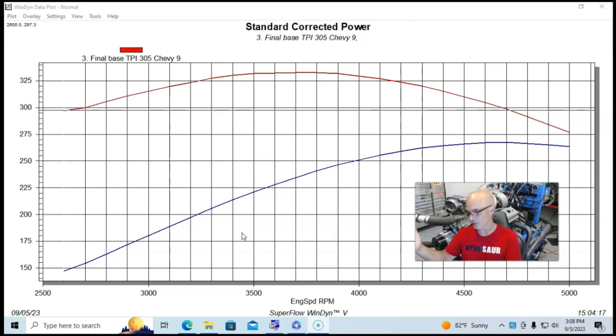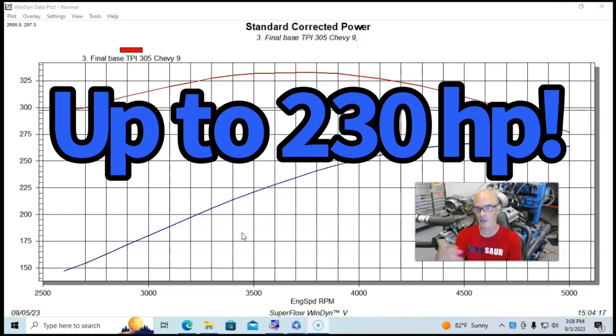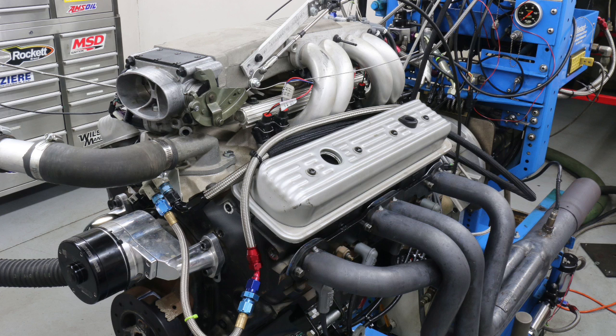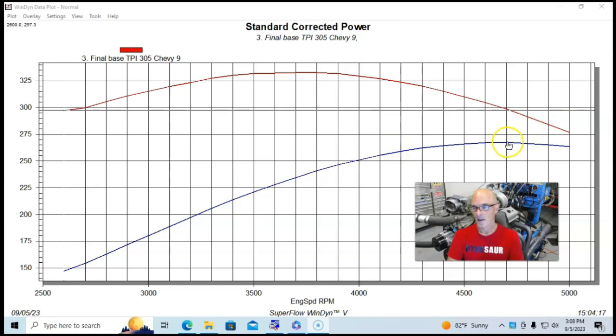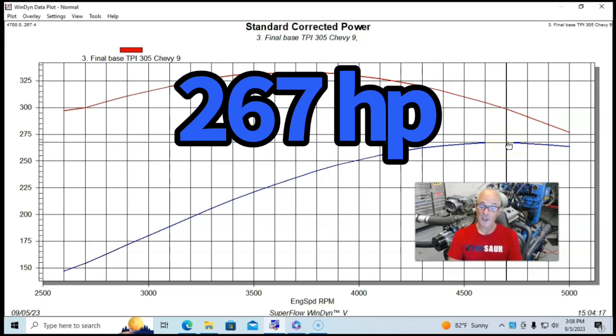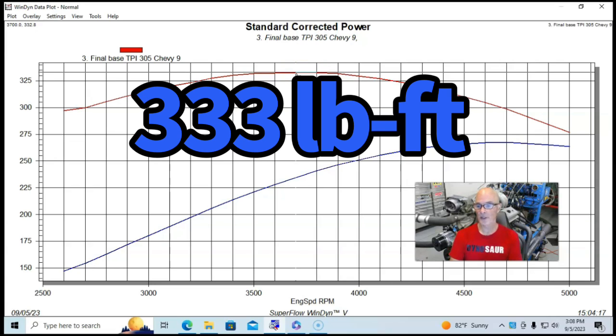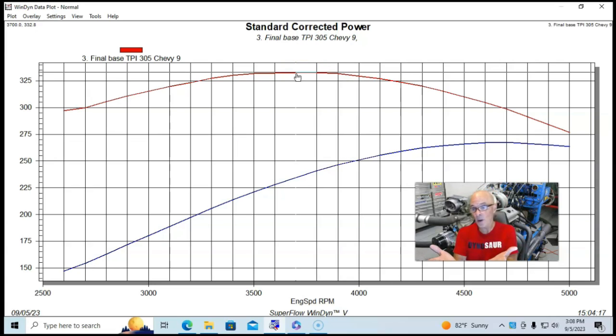Naturally, it made more power than its rated number, anywhere from 205 to 215 horsepower, depending on which year and configuration you got this thing in. But when this thing was run on the engine dyno in the configuration that I mentioned, the tune port 305 actually made 267 horsepower and 333 foot-pounds of torque. You can see, it did very well.